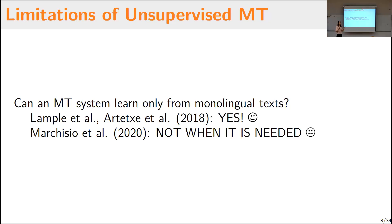There was an initial hype that unsupervised machine translation can work, and after the first papers in 2018 a lot of new papers appeared at almost every conference. Later on, several researchers found that the problem with these methods is that they work when they are not necessary, and when we actually need them, they don't work very well. In my research I was trying to find methods that would help — and in some cases we were successful. Still, the underlying assumptions of domain overlap are difficult to resolve.